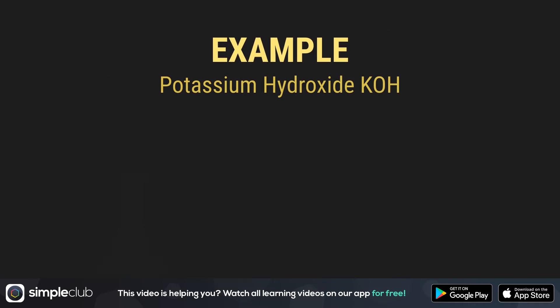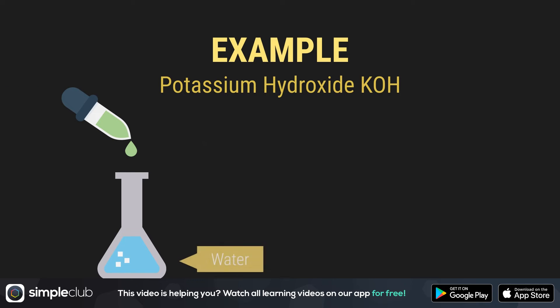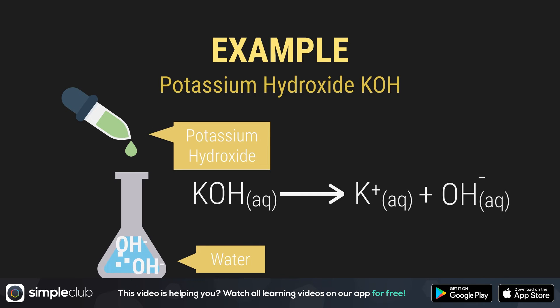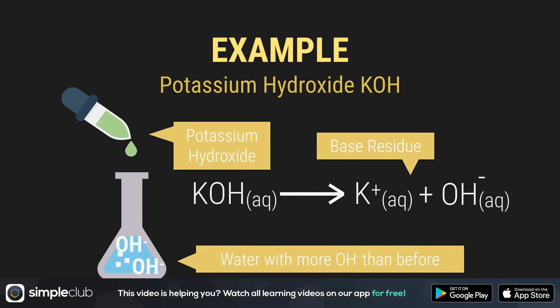We're going to take the example of potassium hydroxide, or KOH, and dissolve it in water. KOH reacts in water, dissolving into potassium ions — that's your positive base residue — and hydroxide ions. The concentration of hydroxide ions in the water will also increase by adding the potassium hydroxide. So Arrhenius bases form additional hydroxide ions and positively charged base residues.